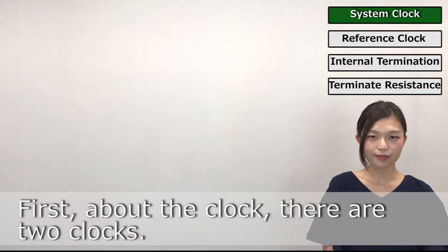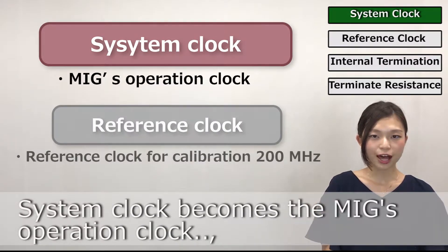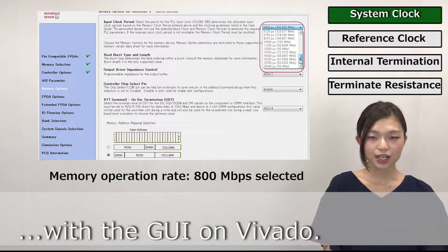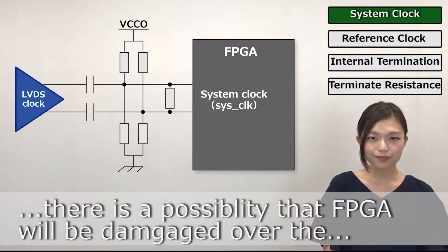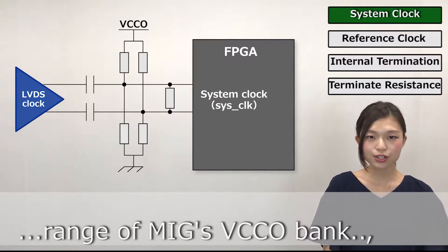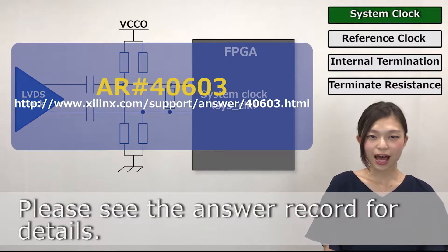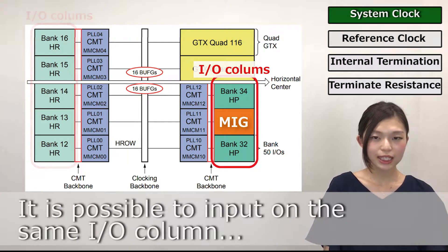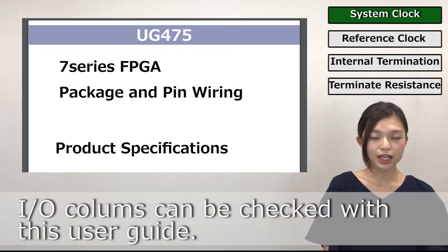First, about the clock — there are two clocks. The system clock becomes the MIG operation clock. Choose from the frequency that can be selected with the wizard on Vivado. When using the LVDS clock, there is a possibility that the FPGA will be damaged over the range of MIG VCCO bank. Please connect with this circuit. Please see the answer or documentation for details. It is possible to input on the same I/O column from the bank that configures MIG. The I/O column can be checked with the user guide.